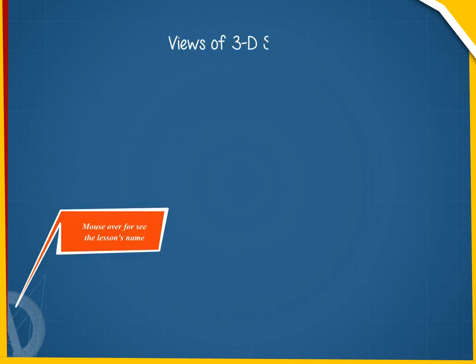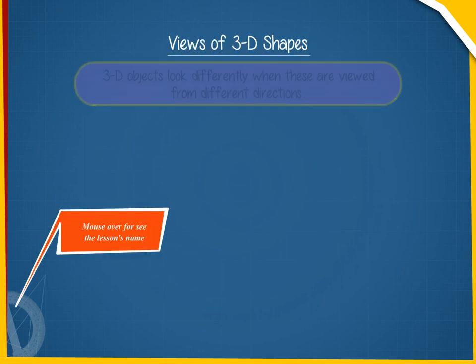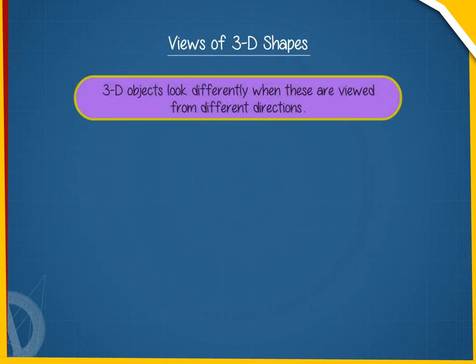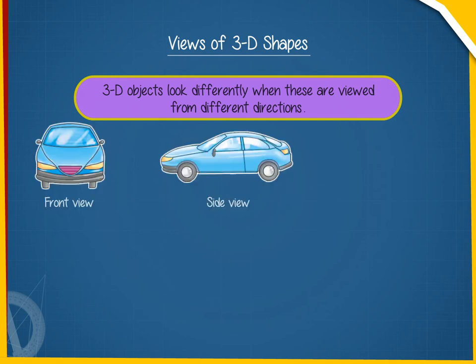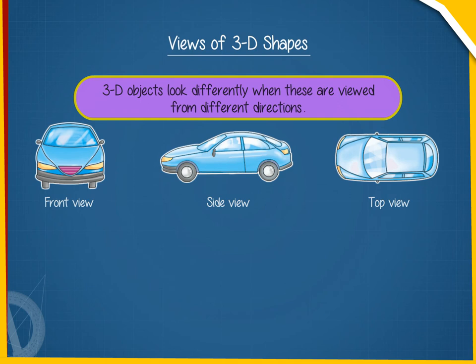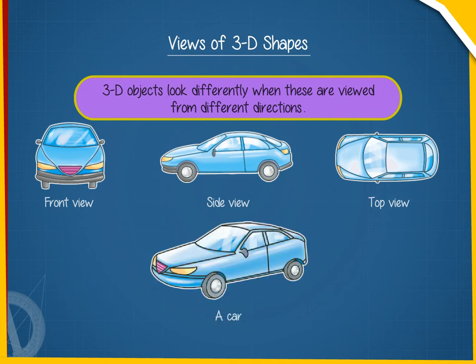Views of 3D shapes. 3D objects look differently when viewed from different directions. For example, a car can have the following three views: front view, side view, and top view.